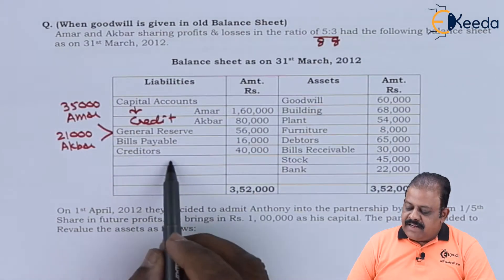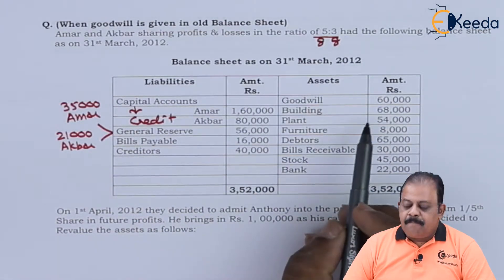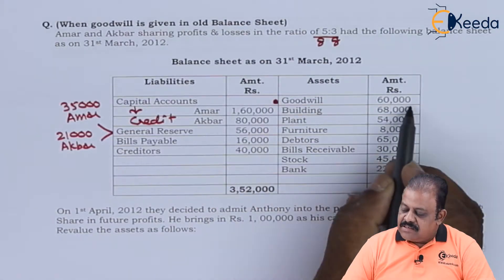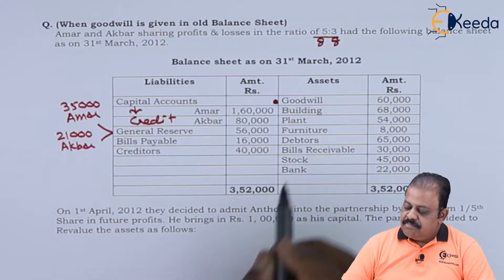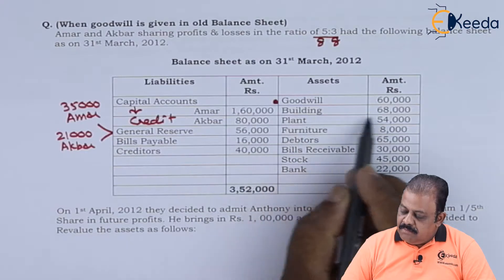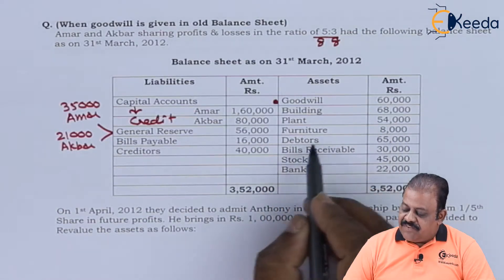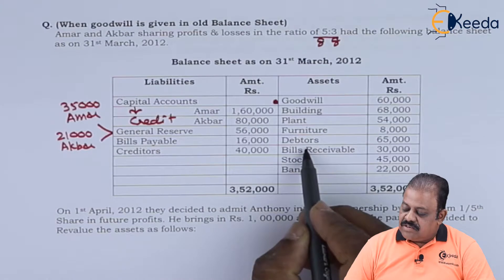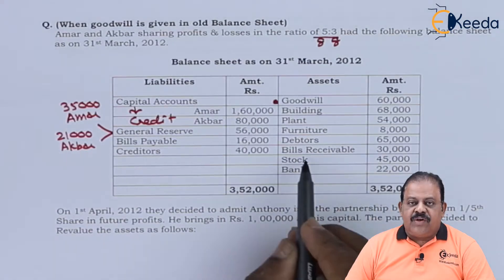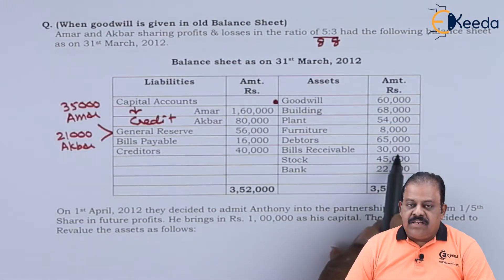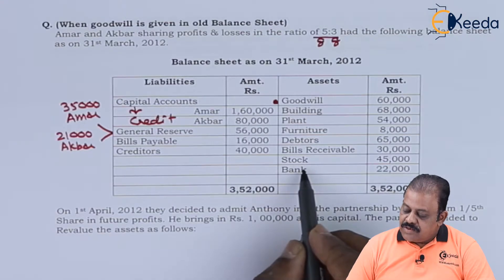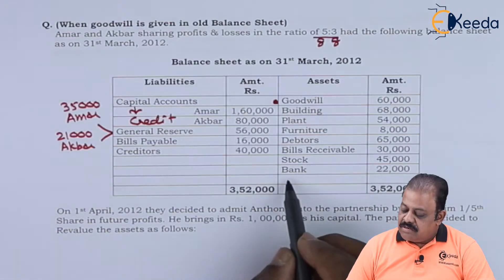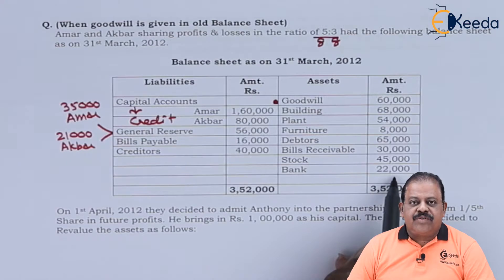Bills payable, creditors. On the asset side, we already have goodwill here, 60,000. Building 68,000, plant 54,000, furniture 8,000, debtors 65,000, bills receivable 30,000, stock 45,000, bank balance 22,000.